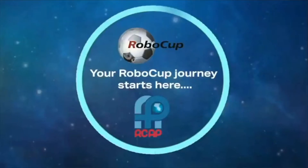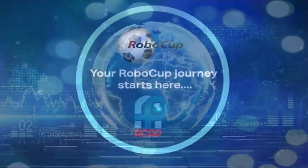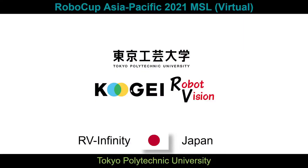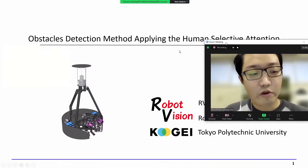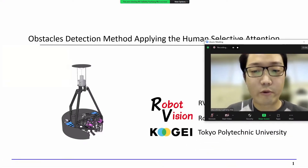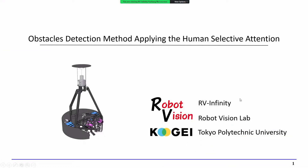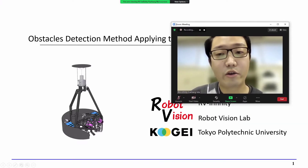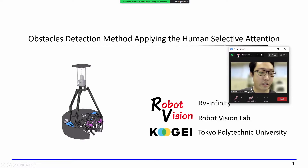I'm a game-changer. I'm a risk-taker. Hello, everyone. I'm Yuhang Ma from RE Infinity. Today, I would like to talk about the obstacle detection method applying human selective attention that we use in our robots. I will start from the introduction.